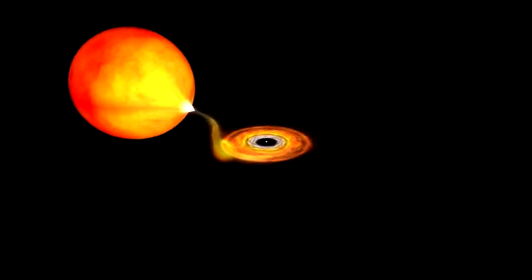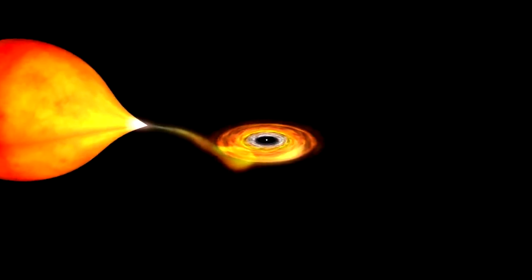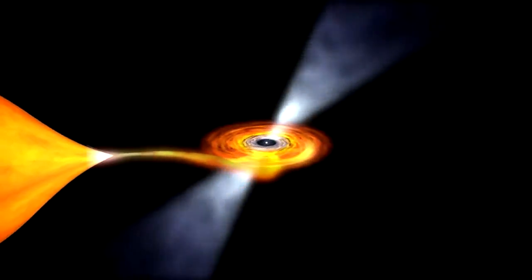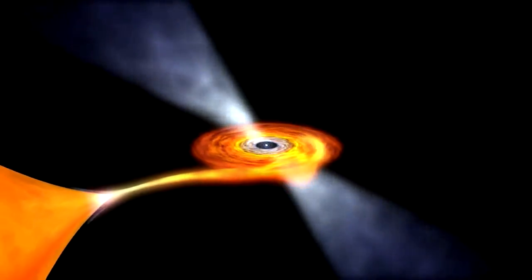Pulsars slow down as they age, but some of the oldest pulsars spin hundreds of times a second. Each of these millisecond pulsars orbits a normal star.